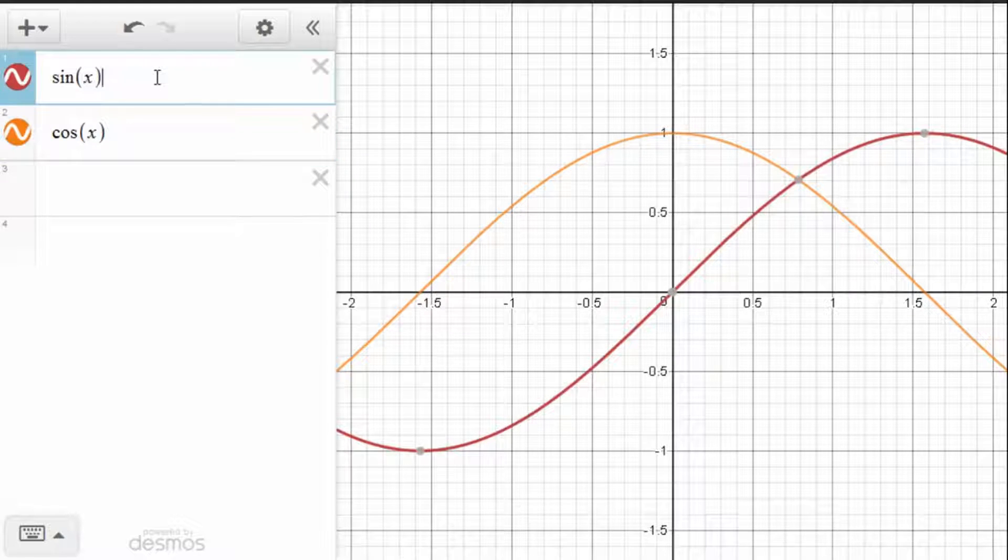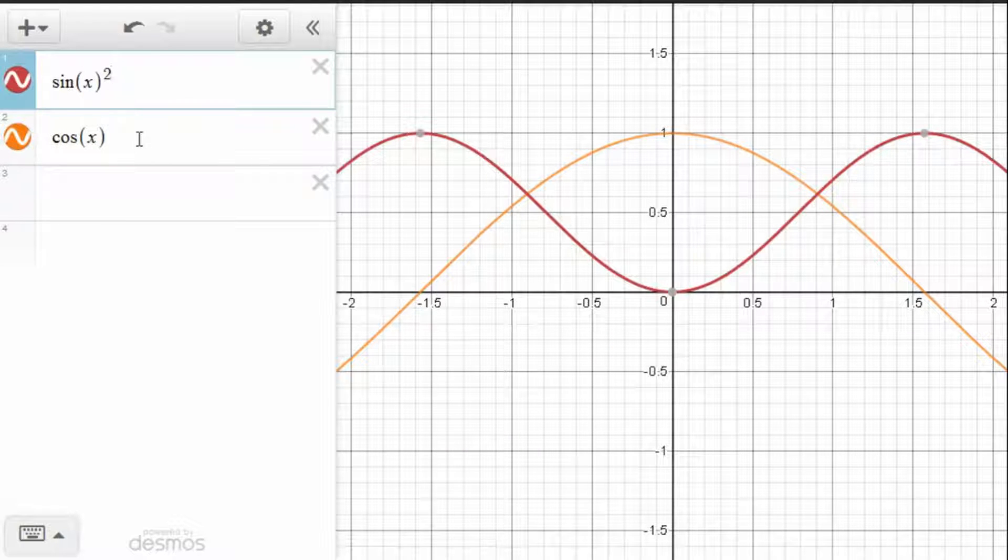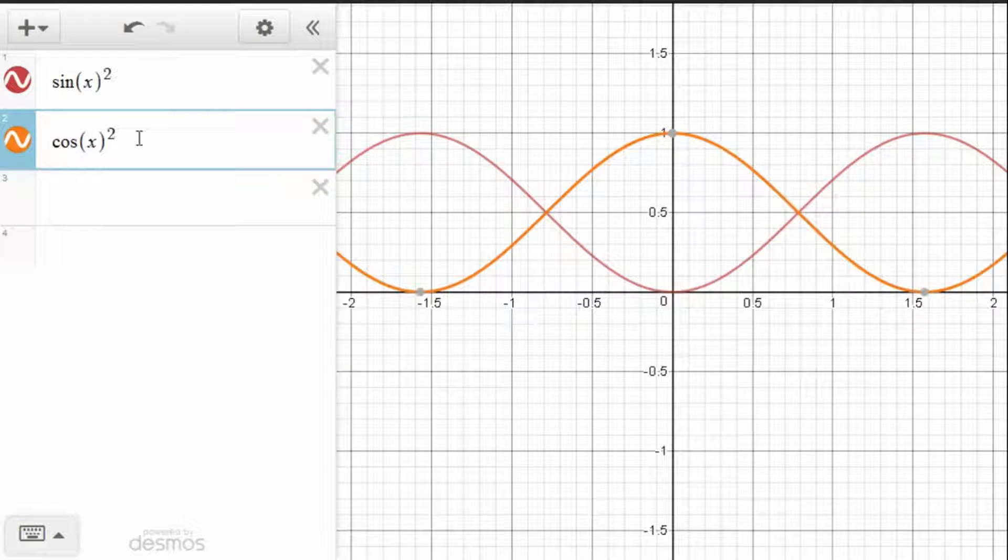But let's now look at the two functions squared. And the picture becomes much clearer. So again, where cosine is at 1, sine is at 0. And where sine is at 1, cosine is at 0. But where they cross now is very clearly 0.5.